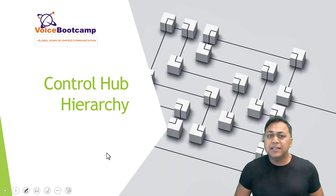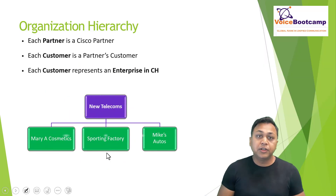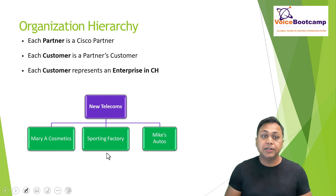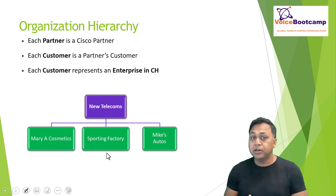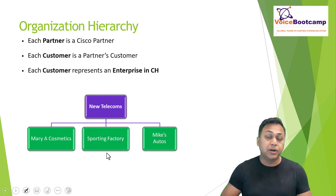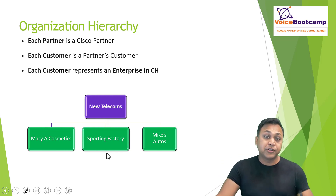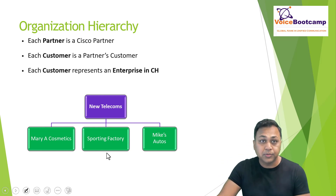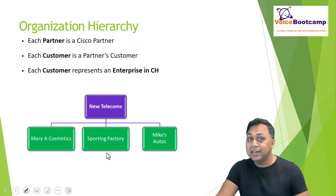What is the hierarchy of your Control Hub? First, each partner is a Cisco certified partner — there could be silver, premium, gold, and so on. Each customer is a partner's customer, not directly Cisco's customer. Each customer represents an enterprise, meaning the company, in Control Hub. Once you build a customer in your WebEx Control Hub portal, the customer will have an admin account who can log in and manage their enterprise.